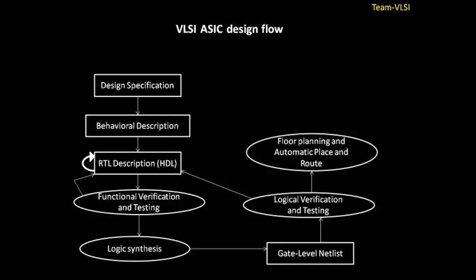After floor planning and automatic placement and routing, we go to physical design, that is physical layout. In physical layout we convert our design into its layout — layout means how different blocks and gates are interconnecting between them. There are lots of rules provided by the fabrication labs considering various effects like antenna effect, crosstalk, and many more, which form rules we must follow in physical layout.